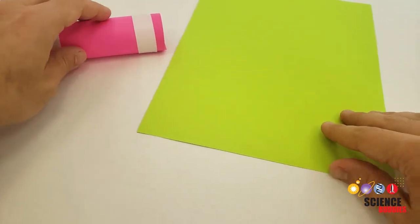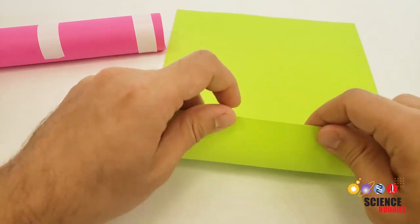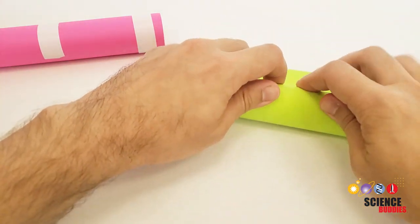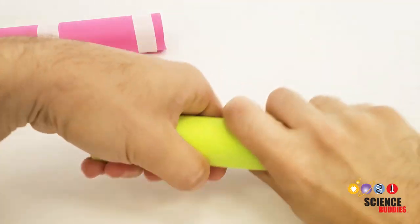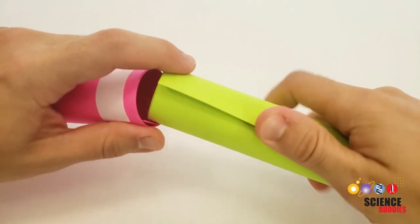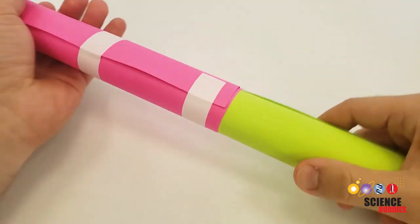Next you're going to take your other piece of cardstock and roll it up again starting along the short edge so it fits inside the first tube. I'm going to roll that up and slide it into the first tube so the two tubes can slide in and out of each other. This is going to allow you to focus your telescope.